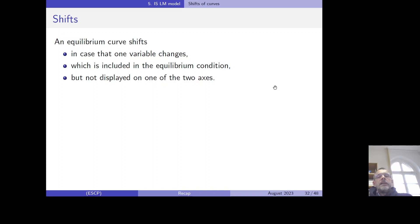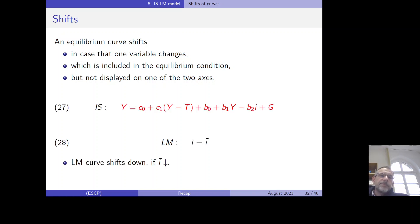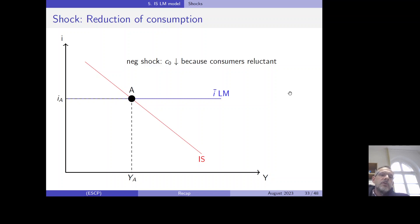An important principle in macroeconomic models: an equilibrium curve shifts when a variable included in the equilibrium condition changes but is not displayed on either axis. Knowing which variables appear in each equilibrium condition, and which diagram we are working in, is essential. In the IS-LM diagram, the interest rate is on the vertical axis and the GDP level is on the horizontal axis. The IS curve is downward sloping, and the LM curve in this model is a horizontal line.